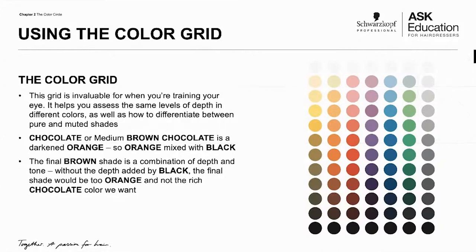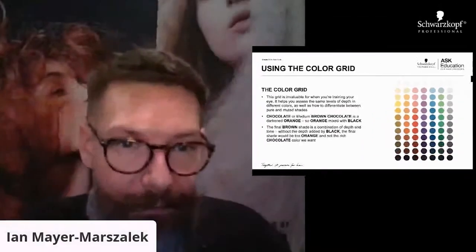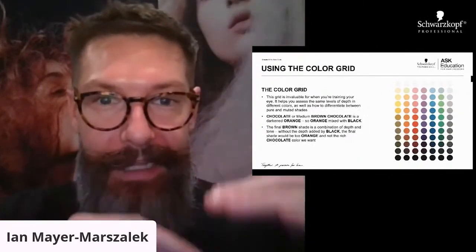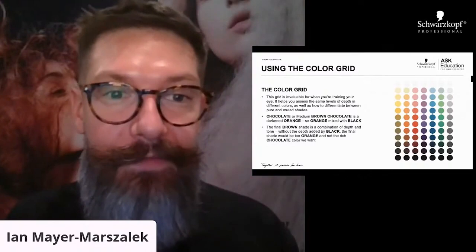Chocolate, or a medium brown chocolate, is a darkened orange. So orange mixed with some kind of black gives it depth. Orange is a secondary color — a combination of yellow and red. But how do you make orange darker? You can't add more red because it'll just go more red. You need something with lightness or darkness in order to make a color have level. In this case, you mix in some degree of black. The final brown shade is a combination of your primaries, but depending on what level you're at, it also includes some sort of achromatic color.